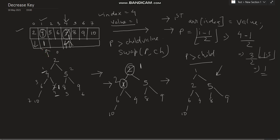Now we are standing at index 1 and again we need to check its parent. Using the formula i minus 1 by 2: (1 - 1) / 2 = 0. So the parent index of index 1 is index 0, and the value there is 2. We compare 2 with 1 — again the parent is greater than the child — so we perform a swap. Now 1 will be at the root and 2 moves down.